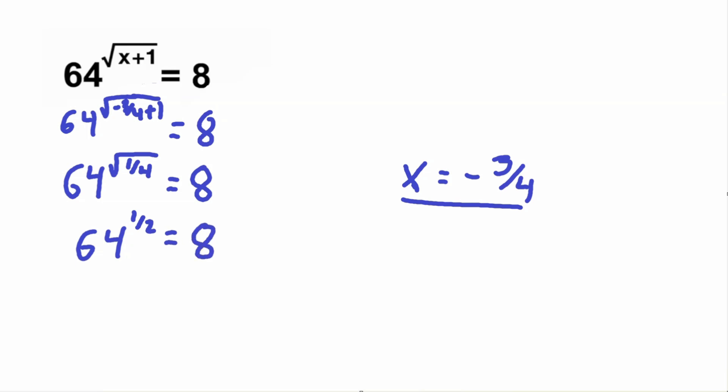Now finally, what is 64 to the 1 half? Well, what does it mean to have a power to the 1 half? That means that we are going to root it, and our root value will be the denominator here. So this is a 2 here, and this is the same thing as a normal square root. And square root of 64 is equal to 8. So we checked this correctly, so that means that our value of negative 3 fourths for x is our correct value.